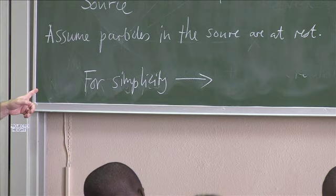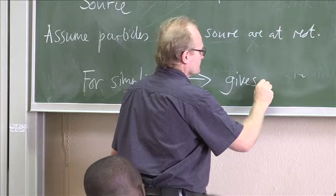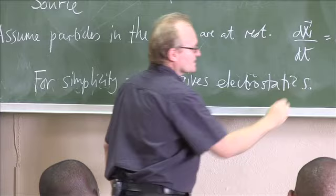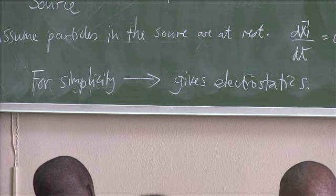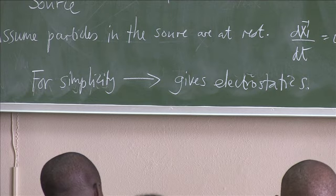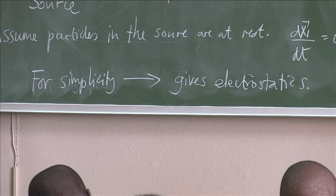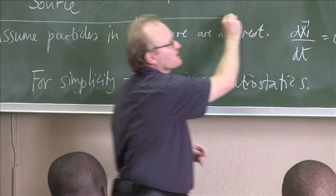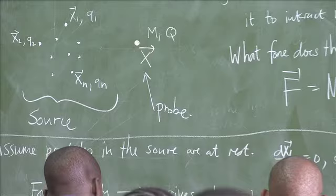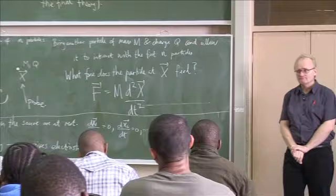And this will lead us to electrostatics. So when we want to start studying magnetostatics, we'll allow the particles to move with a constant velocity. And then when we want to study electrodynamics, the particles can have any motion at all. There can even be accelerations in the game. So those are the three assumptions that we're going to make. That's the basic question, and the three assumptions we're going to make. Are there any questions or comments that anyone would like to make at this point?